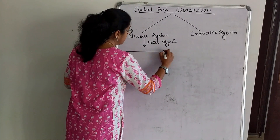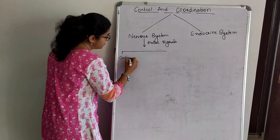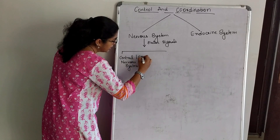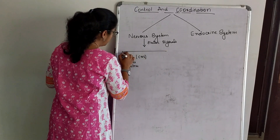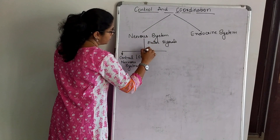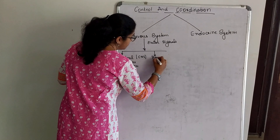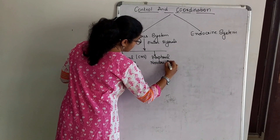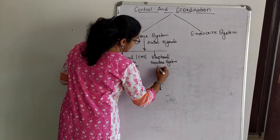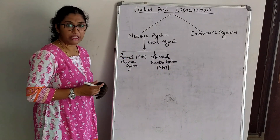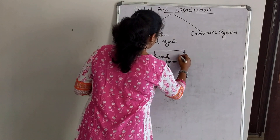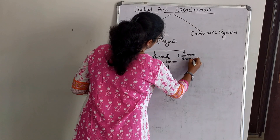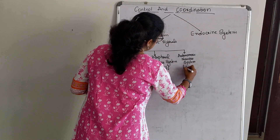The nervous system is broadly classified into: the Central Nervous System (CNS), the Peripheral Nervous System (PNS), and the Autonomic Nervous System (ANS).